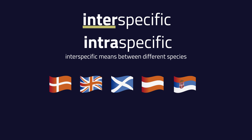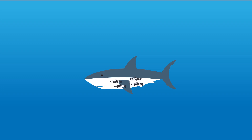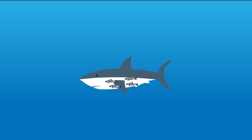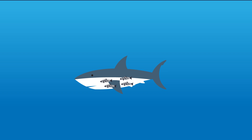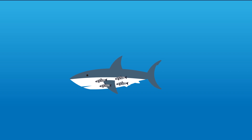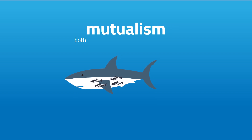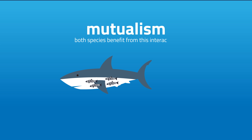Intraspecific and intraspecific interactions can be positive, negative or neutral. An example of a positive interaction is how little pilot fish gather around sharks and rays, eating the parasites on their hosts. This is known as mutualism because both species benefit from this interaction.